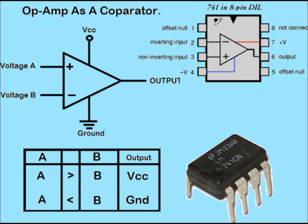Here I have shown the pin diagram of the LM741 IC along with a picture of the IC for reference. In this video I am using the LM324 op-amp. The op-amp in both ICs works almost the same, so there will be no difference in the working of the circuit. You can use LM324, LM741, or any other op-amp you have available — the circuit remains the same.